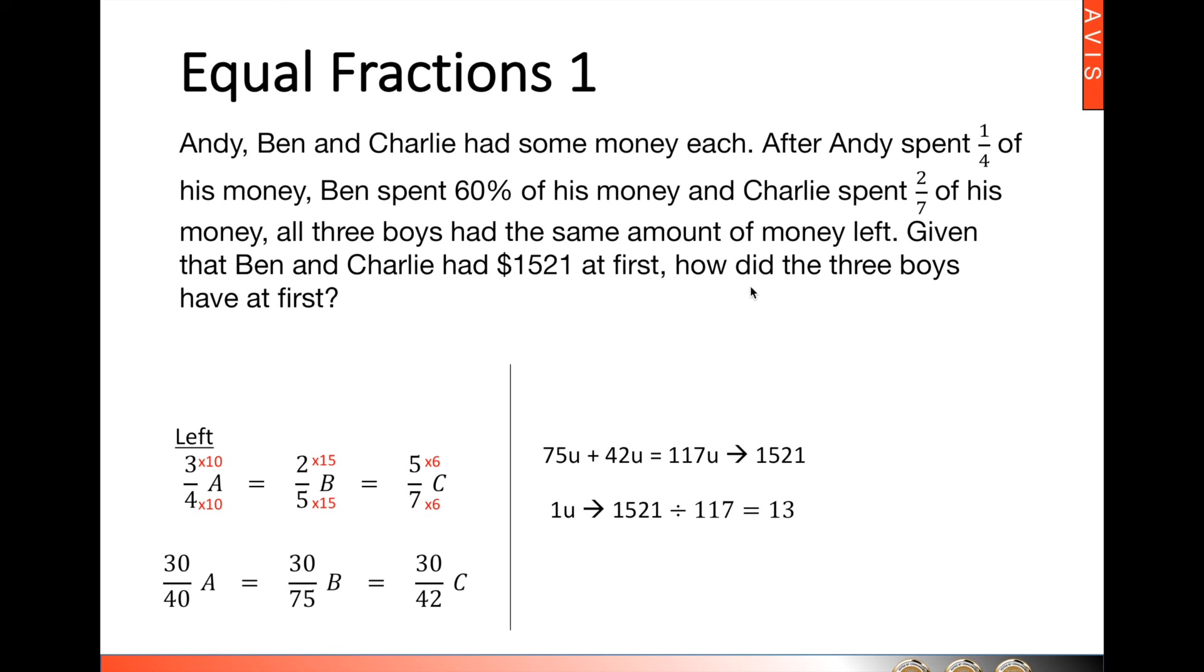How much did the three boys have at first? Having said that, the three boys is forty units plus seventy-five units plus forty-two units. And this will give us one hundred and fifty-seven units. Multiply by thirteen and this would give you $2,041. That concludes our equal fractions type one.